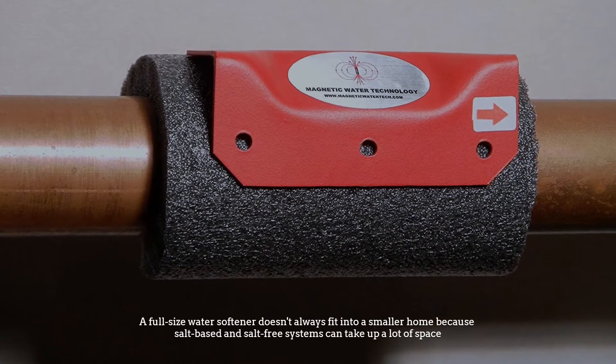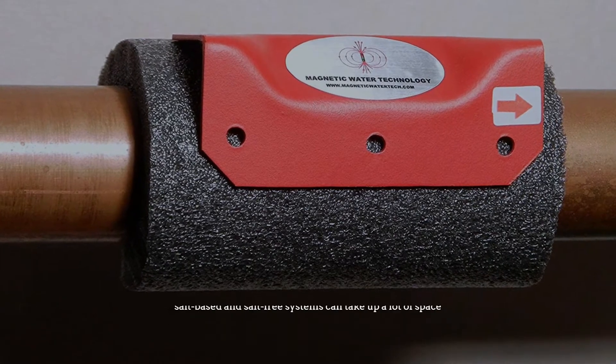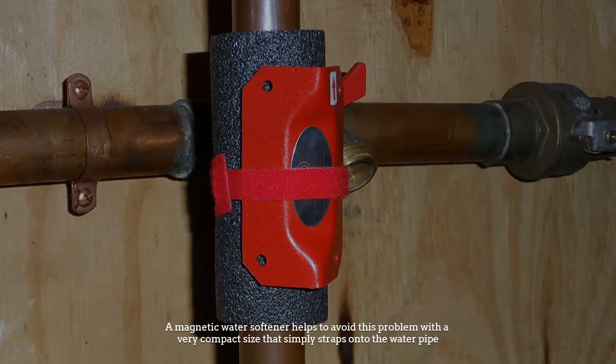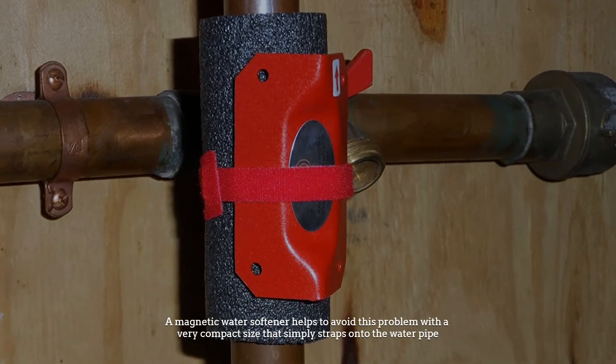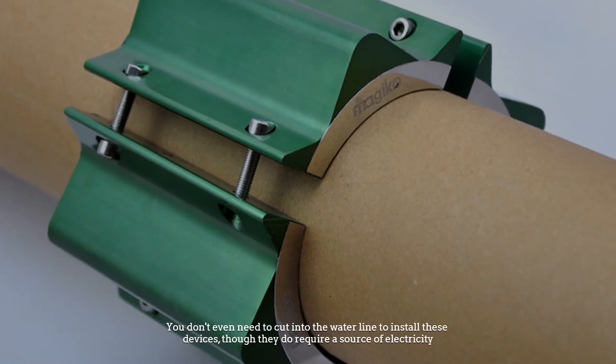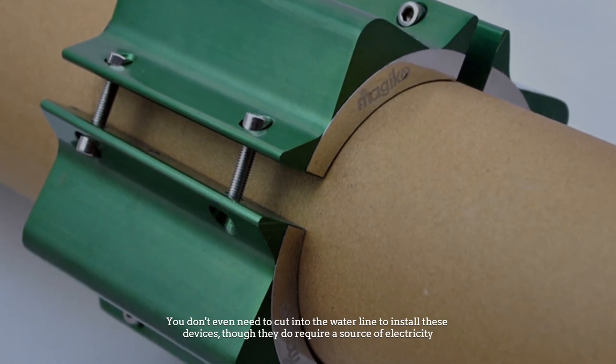Number four: magnetic water softeners. A full-size water softener doesn't always fit into a smaller home because salt-based and salt-free systems can take up a lot of space. A magnetic water softener helps to avoid this problem with a very compact size that simply straps onto the water pipe. You don't even need to cut into the water line to install these devices, though they do require a source of electricity.